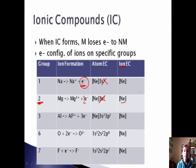For aluminum, it's going to lose 3 electrons. Its atomic electron configuration is neon 3S2 3P1, but when it loses those 3 electrons, its electron configuration becomes similar to the noble gas.